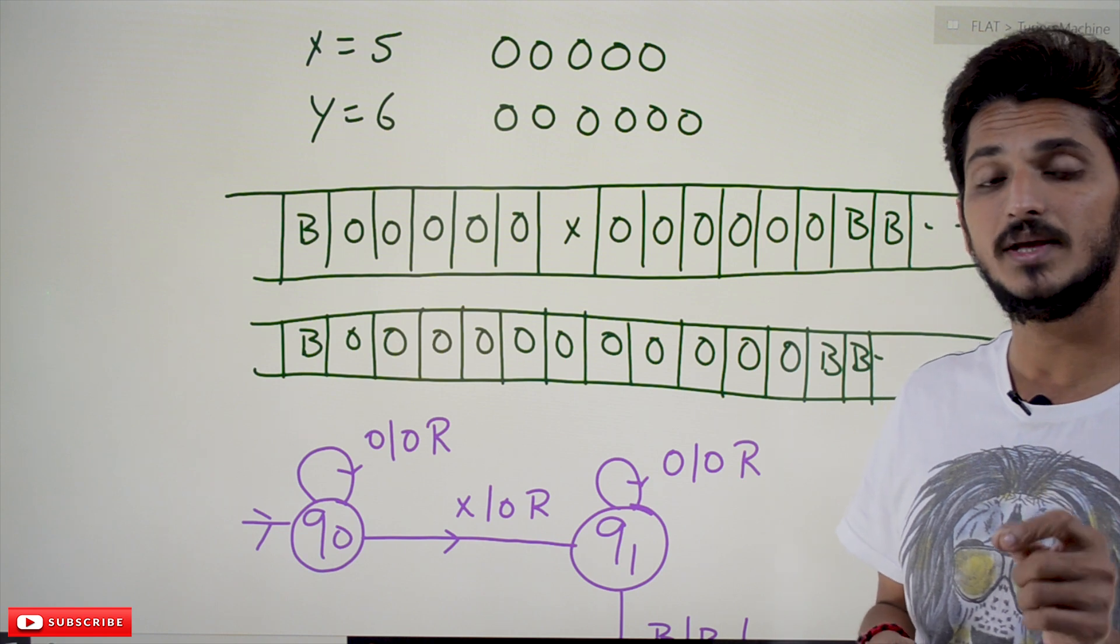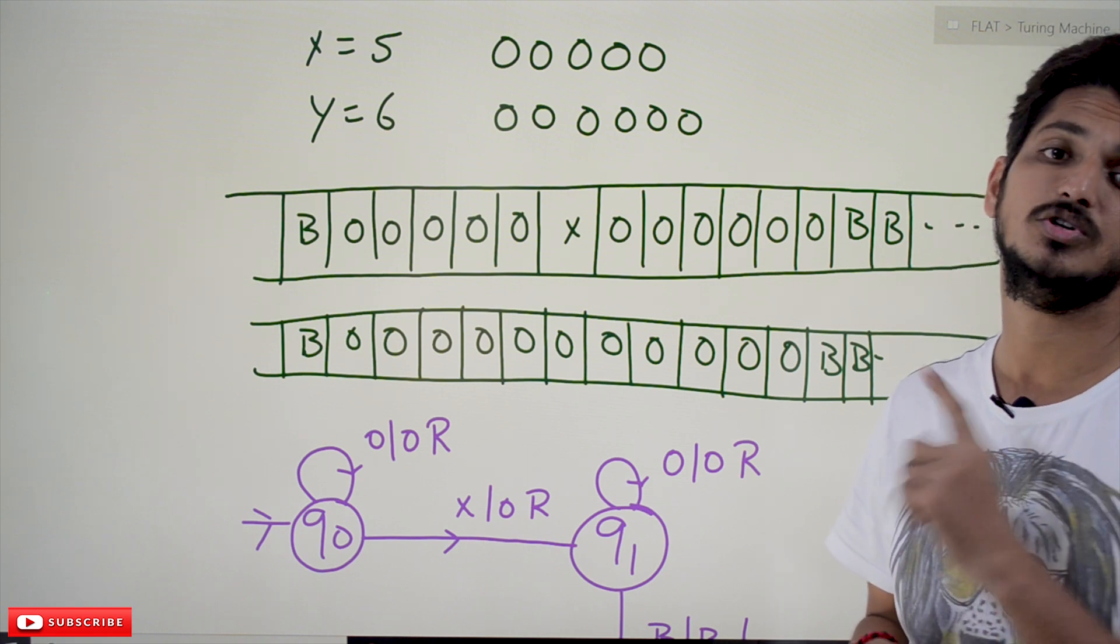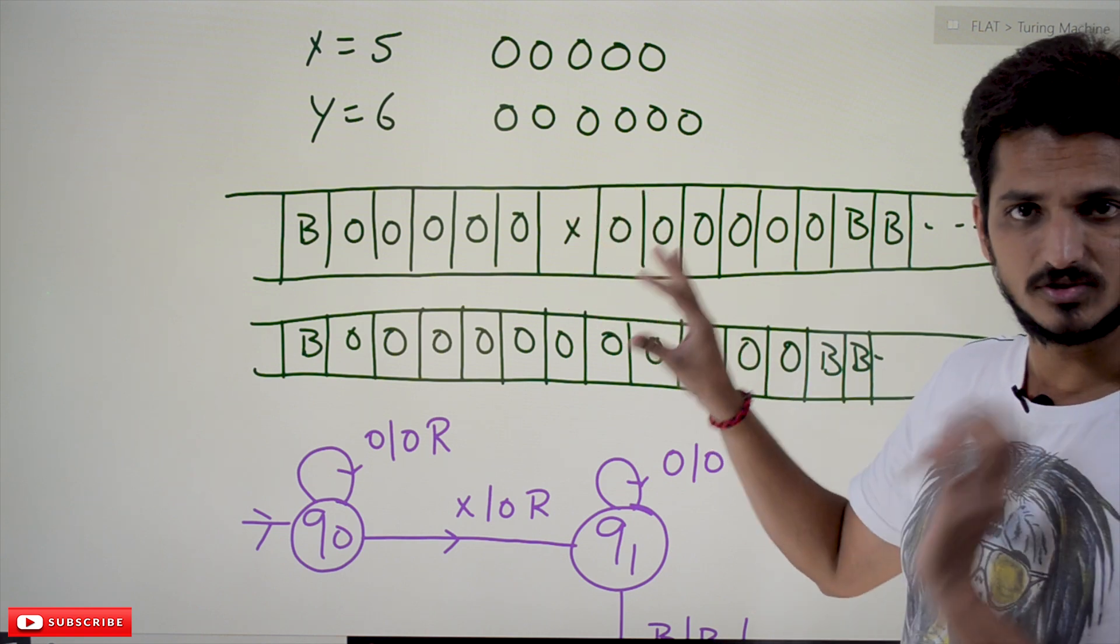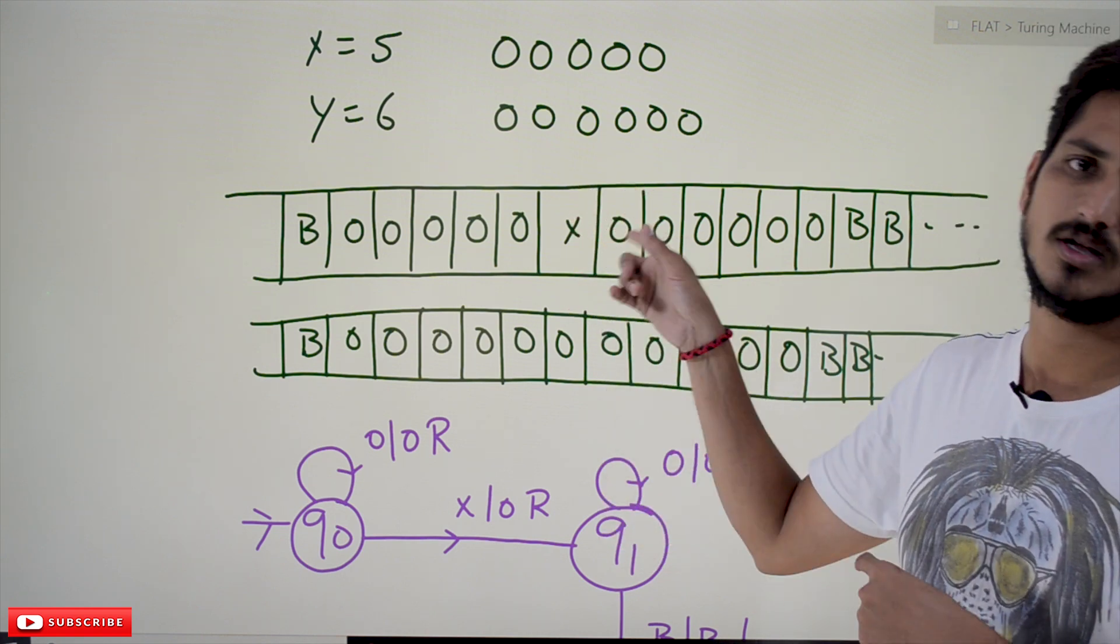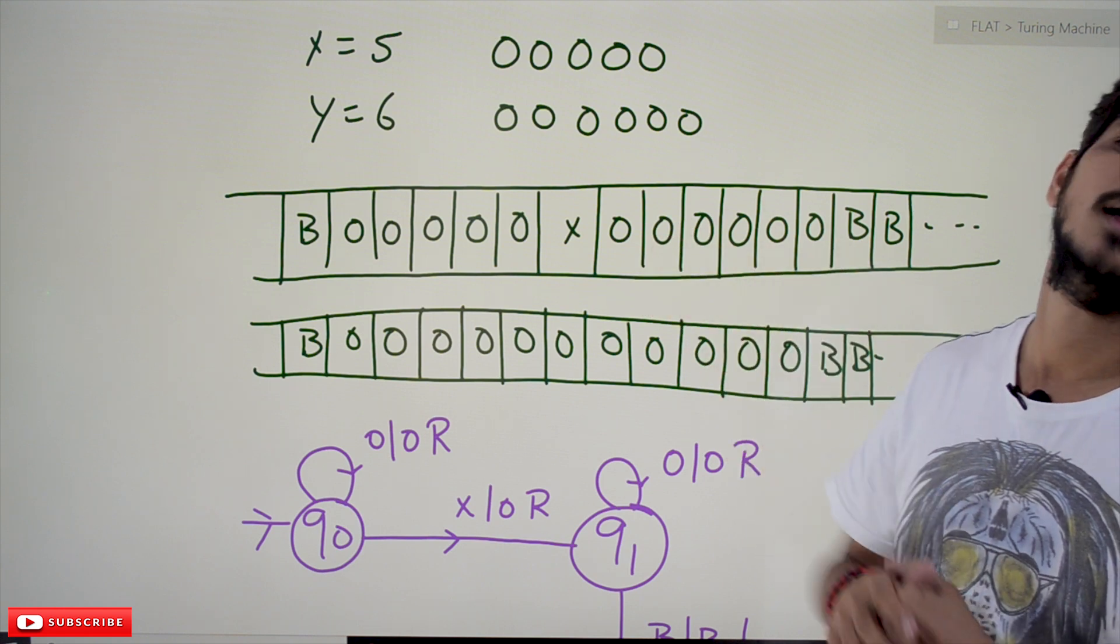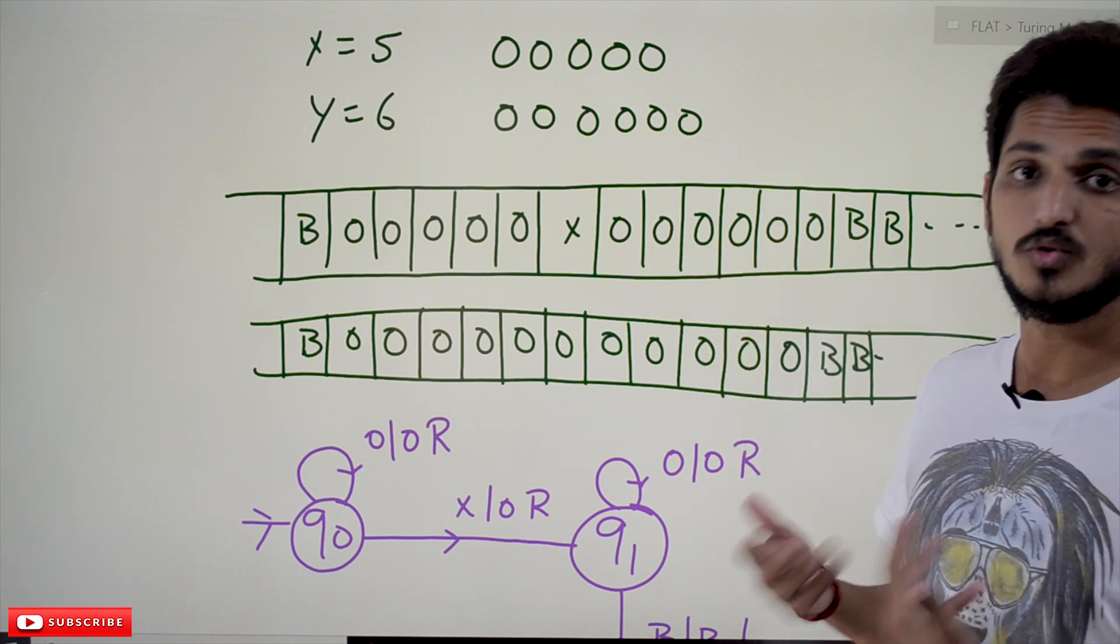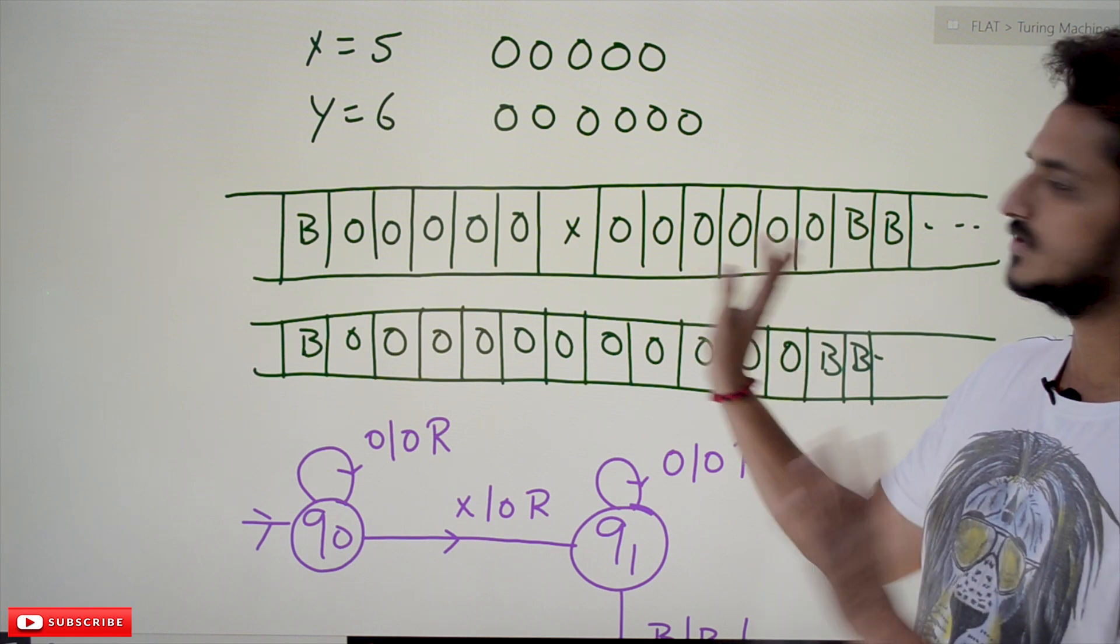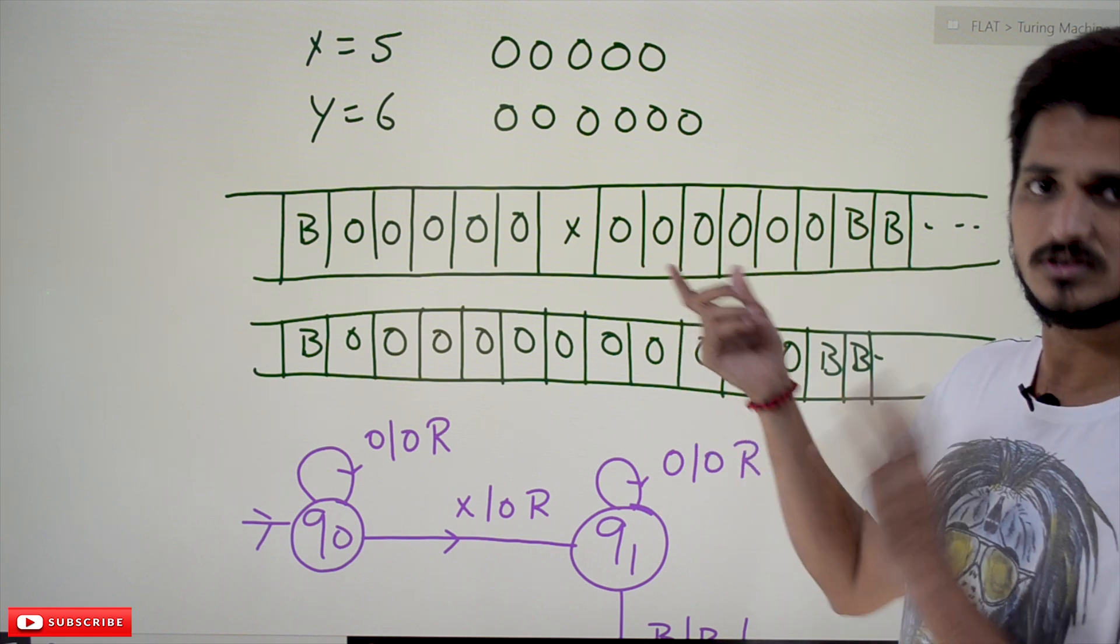11 means in unary number system, 11 zeros should be there on the tape. If you place 11 zeros, then we can say that unary number 11 is present on the tape. So how to do that? 5 plus 6 equals 11. Yes, 11 zeros - if you place it as 11 zeros, it is unary number 11.